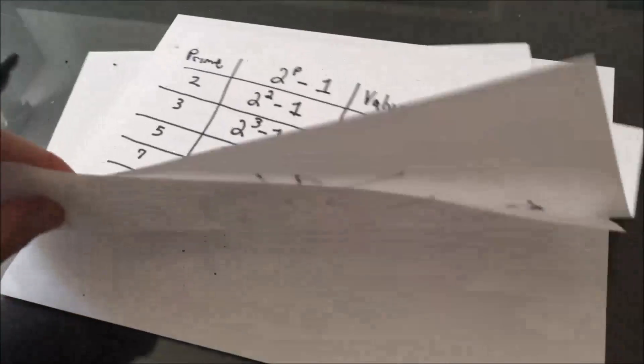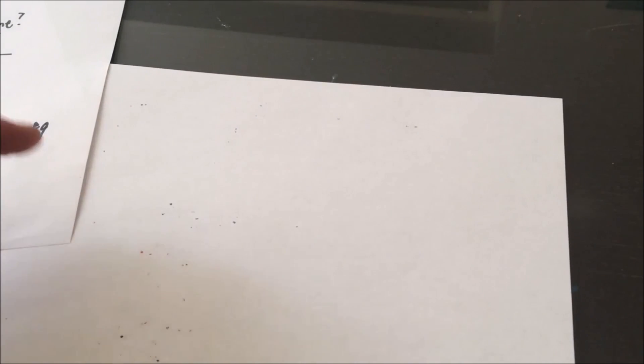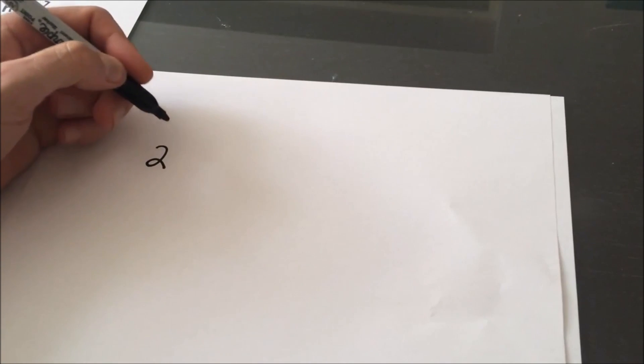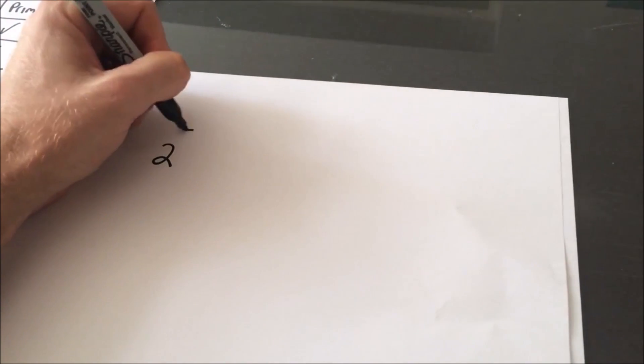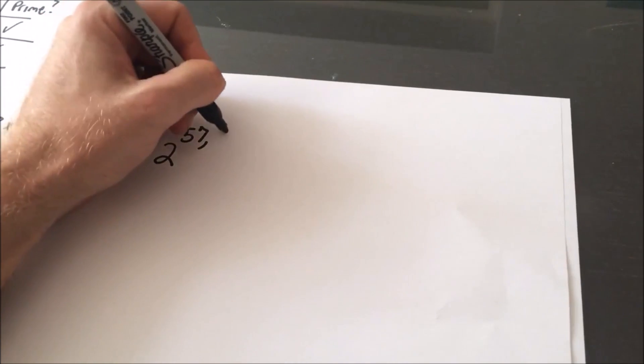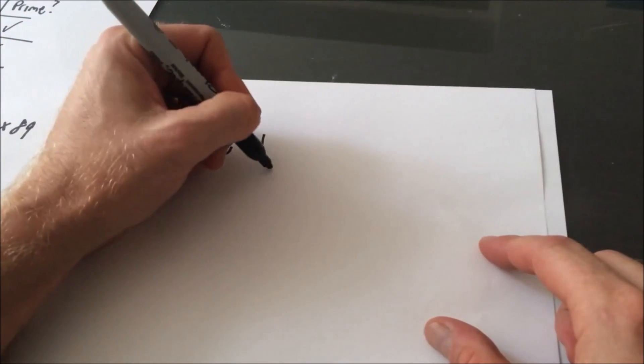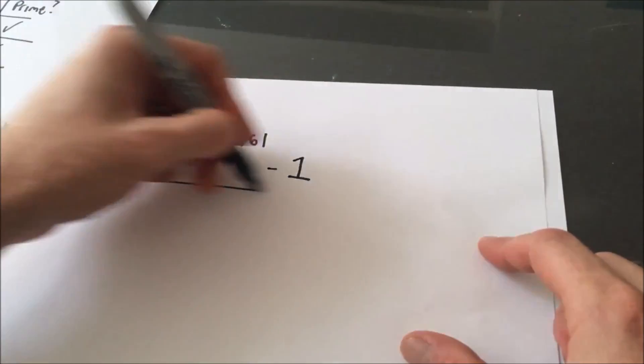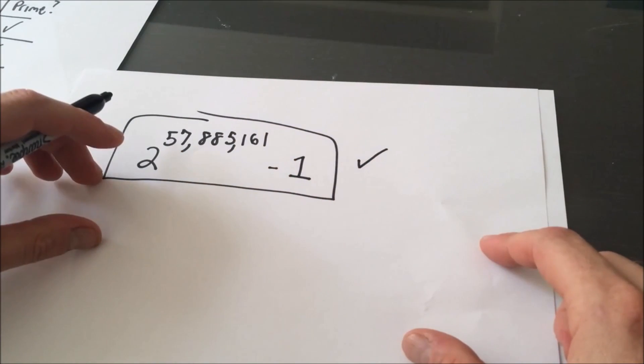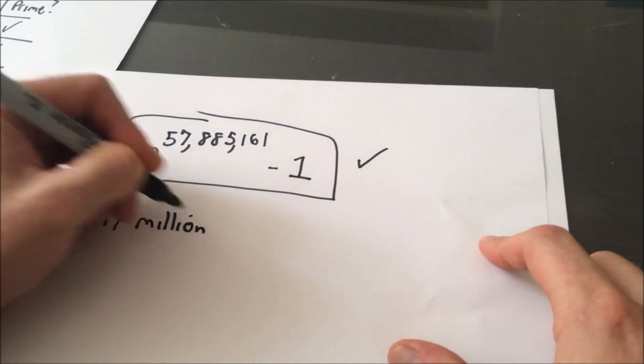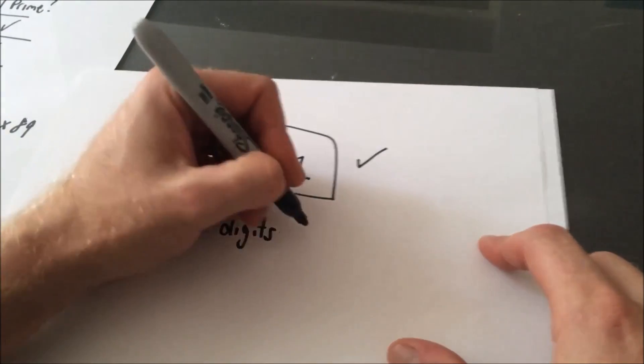It turns out, I believe it was in 2013, they found a huge prime number. And it turns out that that prime number, that Mersenne prime, was 2 raised to the power of 57,885,161. You can check this, this number, this exponent is in fact a prime number. Minus 1, it turns out this number is in fact prime. And the interesting thing about it too, is if you were to expand this, it would actually be 17 million digits long, which is pretty amazing.